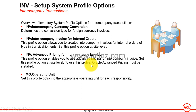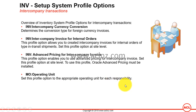Lastly, MO Operating Unit is a profile option that you set to the appropriate operating unit for each responsibility. It tells Oracle Applications that a specific responsibility belongs to a particular operating unit. Now let's go into Oracle Applications and look at these system profile options one by one.